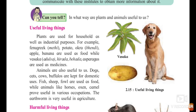Now, which are the useful living things for us? Plants are used for household as well as industrial purposes. The wood we get from plants is also useful. For example, fenugreek — called methi in Marathi — potato, okra (bendi), apple, and banana are used as food, while vasaka (adursa), haritaki, behera, and asparagus are used as medicines. Whenever you have a cough, your mother normally gives you adursa syrup, which has medicinal properties.